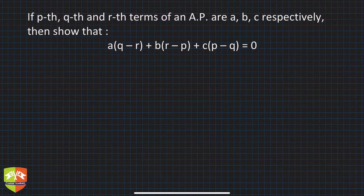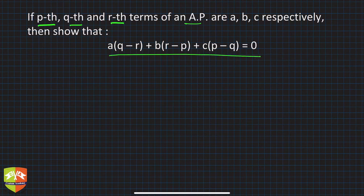It is stated that the p-th, q-th, and r-th terms of an AP are a, b, and c respectively, and you have to show that this expression equals zero. So I hope you understand what the p-th term means.